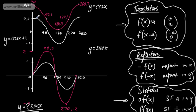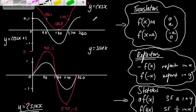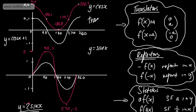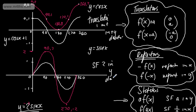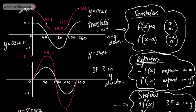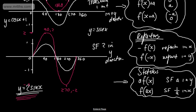So that is a translation of 1 unit in the positive y-direction. For the previous example, it was a scale factor stretch of 2 in the y-direction. Those are two quick examples of transforming trig graphs. Full learning videos can be found at the link — these were just two quick worked examples.